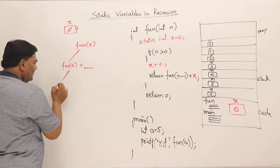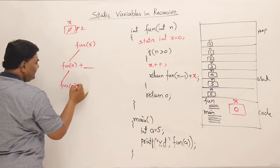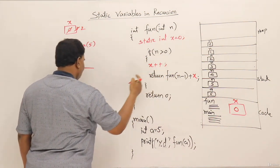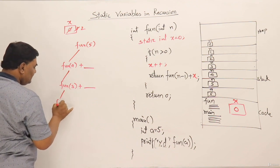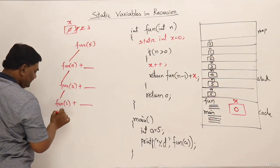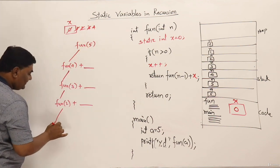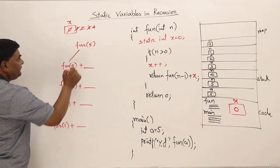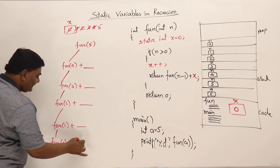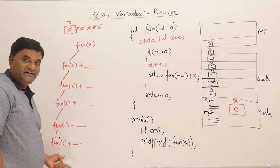Continuing: for fun(3), x++ makes x=3, call fun(2) plus x. For fun(2), x++ makes x=4, call fun(1) plus x. For fun(1), x++ makes x=5, call fun(0) plus x. Fun(0) returns 0, so the result of that call is 0.